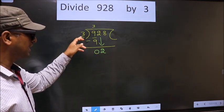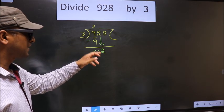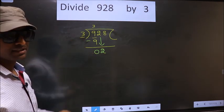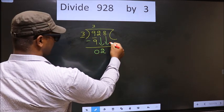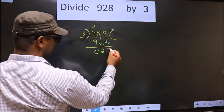Here we have 2. Here 3. 2 is smaller than 3. So what many do is they directly bring down the second number down. That is 8.